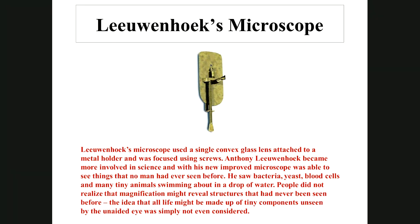Here is Leeuwenhoek's microscope. You hold it by a little handle, and one screw raises or lowers the specimen on a pin tip positioned behind a small glass lens. The other screw moves the specimen back and forth, allowing you to sharpen the image.